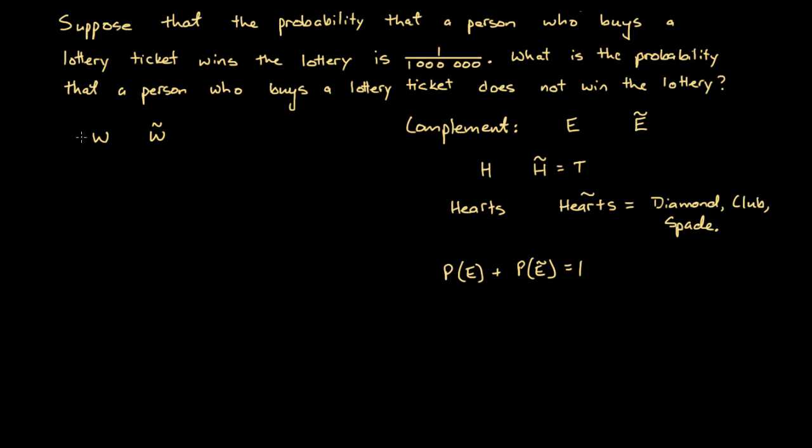So here, we know that the probability of winning, plus the probability of not winning, equals one. And we're also given the probability of winning. We're given that the probability of winning equals one over a million.